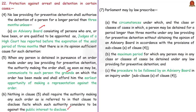The protections include: the detention of a person cannot exceed three months unless an advisory board — consisting of judges of a High Court — reports sufficient cause for extended detention. The grounds of detention should be communicated to the detenue, but facts considered to be against the public interest need not be disclosed. The detenue should be afforded an opportunity to make a representation against the detention order. Article 22 also empowers the Parliament to make a law to decide the circumstances for detention, the maximum period, and the procedure to be followed by the advisory board.